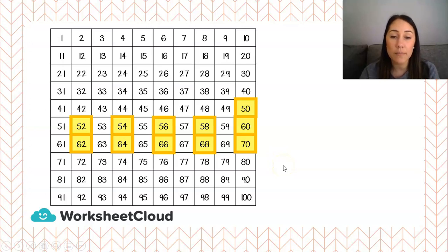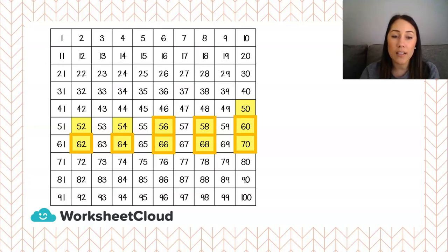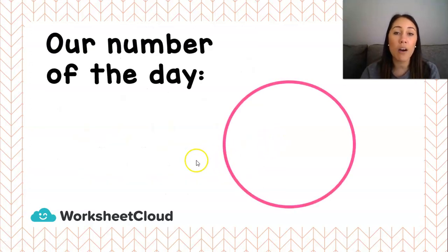70, 68, 66, 64, 62, 60, 58, 56, 54, 52 and 50. These are all our even numbers. All the numbers in between will be our odd numbers. Well done, now we can have a look at what our number of today is.